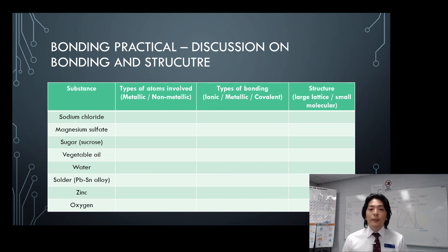Now, once you have done the result table, you can start looking at what sort of atoms are involved, so metallic or non-metallic atoms, by looking at, well, you might need to do a bit of research, like oil, vegetable oil, what sort of atoms are involved in there? Is there any metallic atom? Or would that be non-metallic only? You will need to look into that.